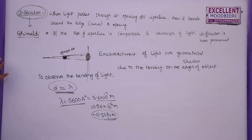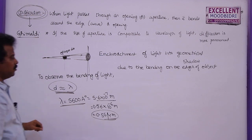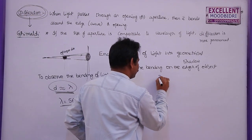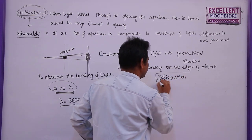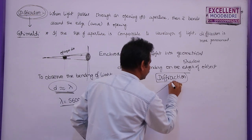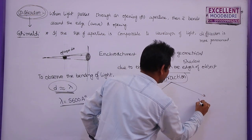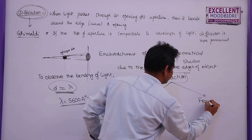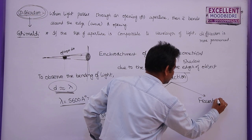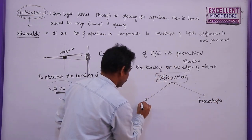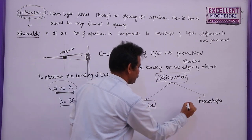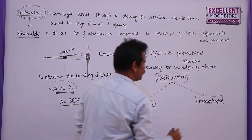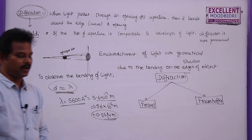This was explained by two different scientists known as Fresnel and Fraunhofer. So diffraction can be divided into two types: one is Fresnel diffraction, and the second is Fraunhofer diffraction.